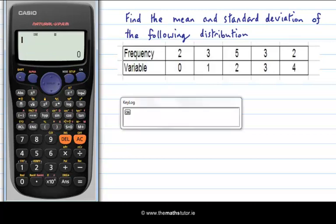First select shift and then hit setup and then we need to scroll down to select the option we want. And you will see it is number three for stat. And it allows you to turn on the frequency with number one. So we do that there.